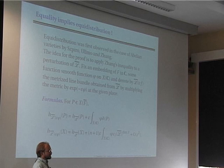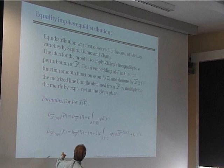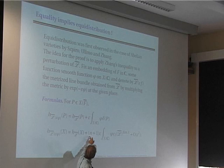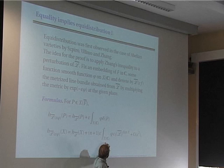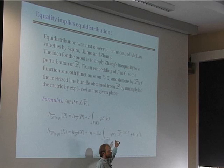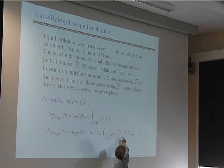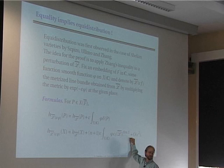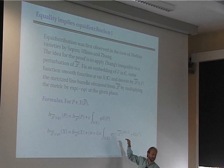For the height of the variety X, using multilinearity of the height pairing: the first term is the height of X when ε = 0. The first-order term is (N+1)·ε times the integral over X(ℂ) of φ integrated against the measure c₁(L̄)^N on X. Recall that to L̄ I had attached a curvature form, and taking its maximal power gives a measure; this measure appears exactly in that formula.